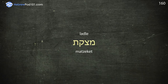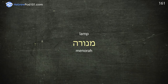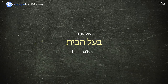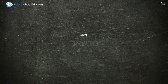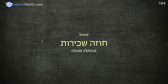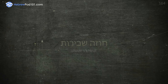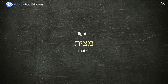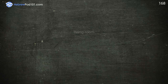Lamp — Menora. Landlord — Lepthinoor. Lighter. Live. Living room — Salon.